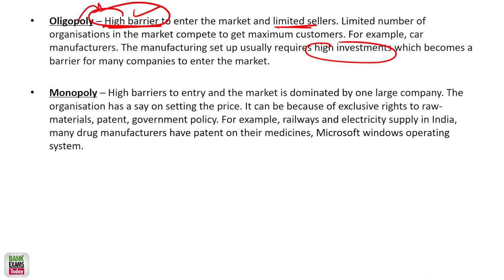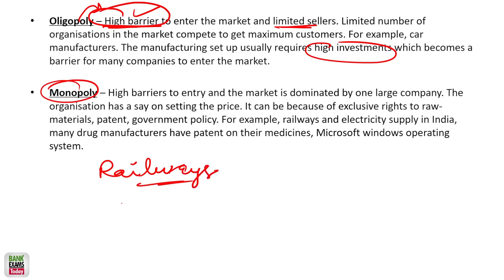In monopoly, one seller controls the market. Indian Railways — they control the railways in India. IRCTC has the monopoly over the food business in the railways. There is a high barrier to entry — it is near impossible to enter the market. Maybe it is regulated by the government, so government policy does not allow entry. Or there is some sort of patent which is not openly available. That is monopoly.